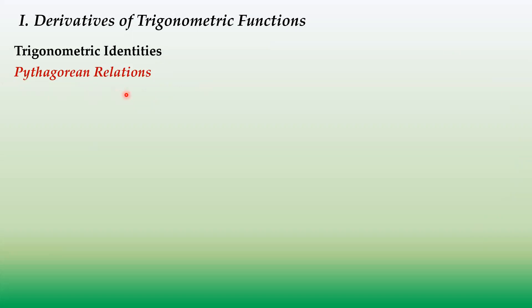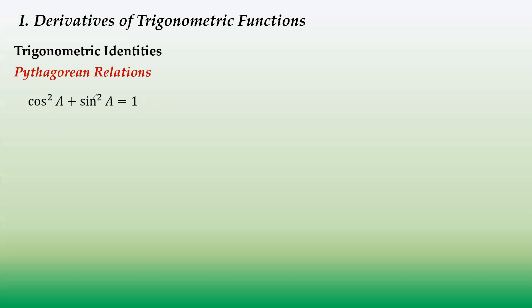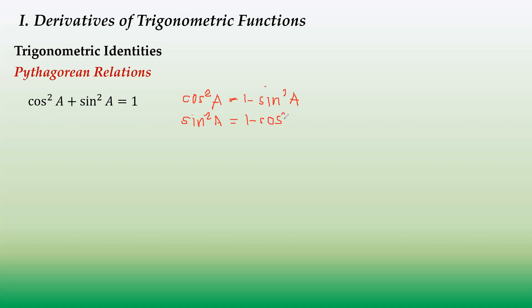First, we have the Pythagorean relations. The first one is cosine squared a plus sine squared a equals 1. By manipulation, you can transpose sine squared to get cosine squared a equals 1 minus sine squared a. Similarly, sine squared a equals 1 minus cosine squared a.